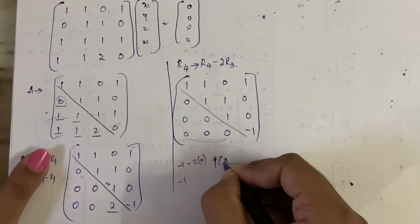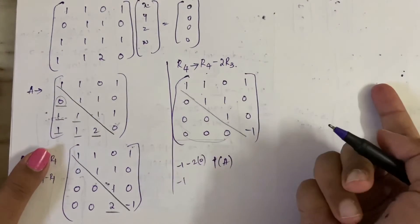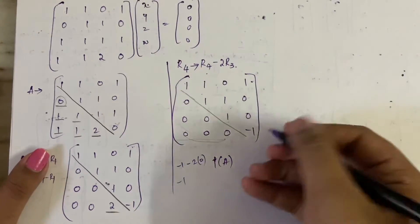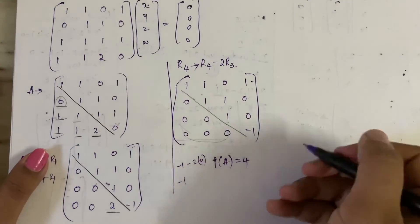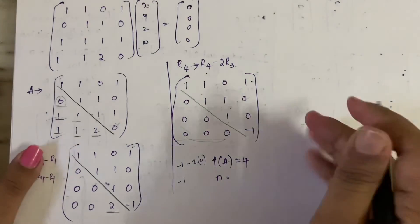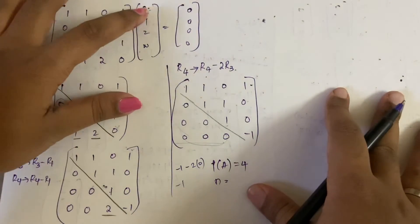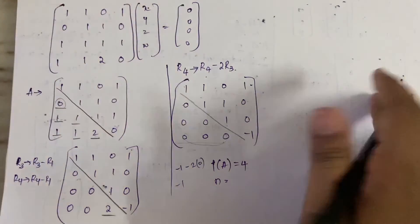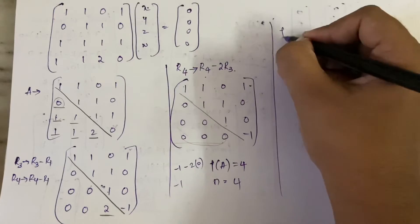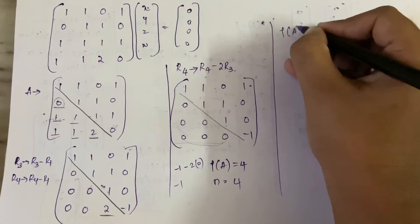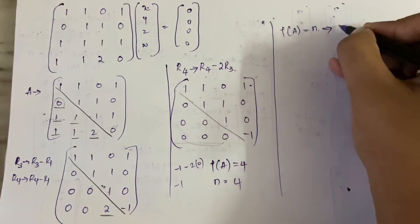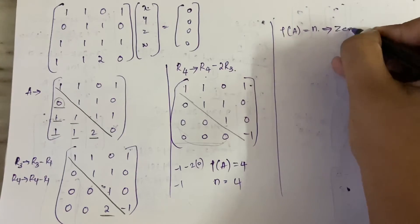How many non-zero rows do we have? One, two, three, four — all four rows are non-zero. So the rank of A equals 4. What is n? n is the number of unknowns: x, y, z, w — that is 4 unknowns. In a homogeneous system, if the rank of A equals the number of unknowns, there is a specific condition.